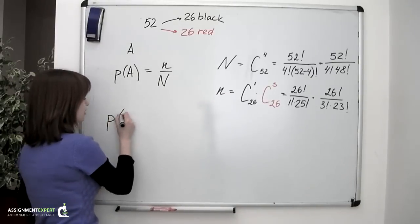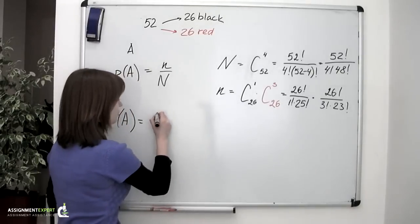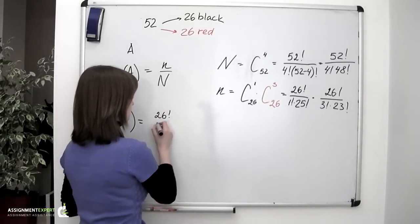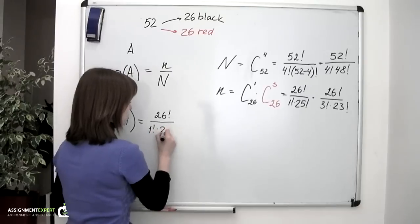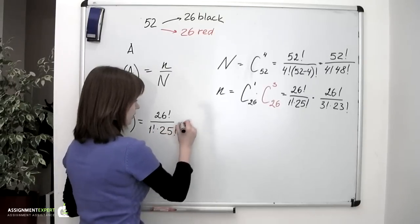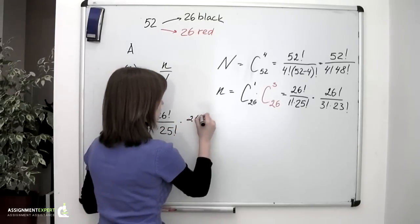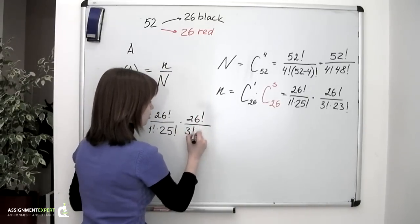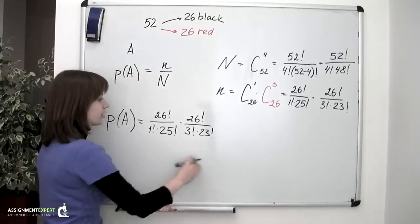So we have the probability of event A is equal to 26 factorial over 1 factorial times 25 factorial, multiplied by 26 factorial divided by 3 factorial times 23 factorial. Here we have the small n.